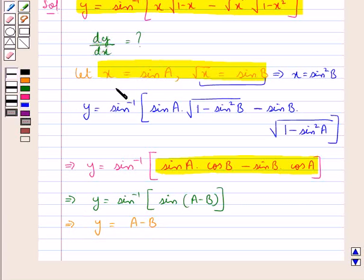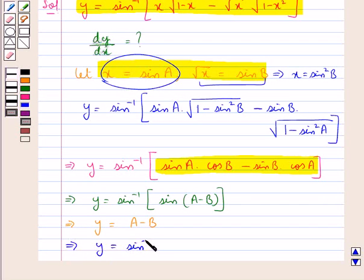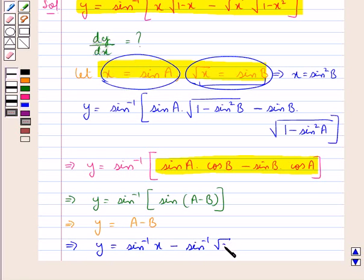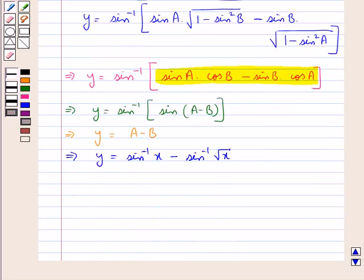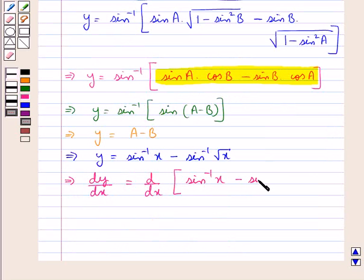As we assumed x to be equal to sin a, from here a is equal to sin inverse x. And since sin b is assumed to be square root x, b would be equal to sin inverse of square root x. So y is equal to sin inverse x minus sin inverse of square root x, and therefore dy by dx is the derivative of sin inverse x minus sin inverse of square root x.